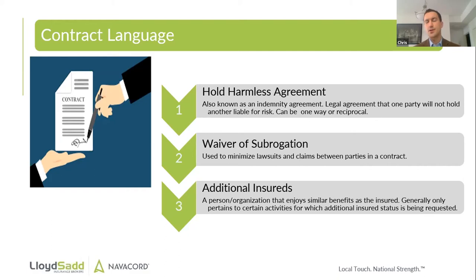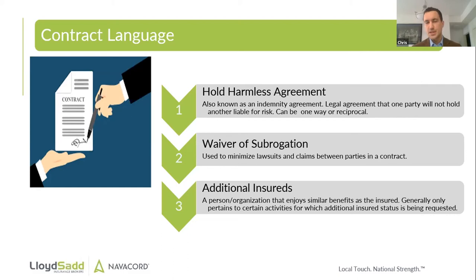Waiver of subrogation is used to minimize lawsuits and claims between parties in a contract. Subrogation occurs when an insurance company pays a claim for negligence and then tries to determine if another party was also liable or partially negligent for that damage, and then tries to recover some of that loss from them. A waiver of subrogation in a policy means your insurance company is waiving the right to go after any other parties involved in that particular project for subrogation — they wouldn't be able to use subrogation against them to get back any of that claim, should you be found negligent.